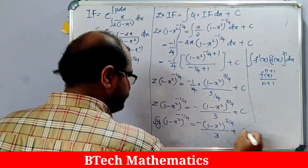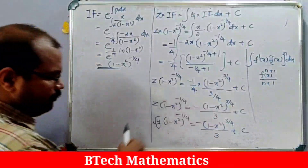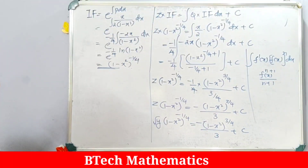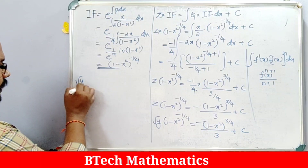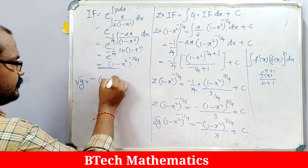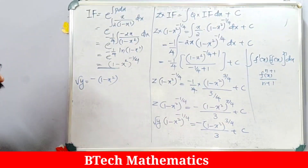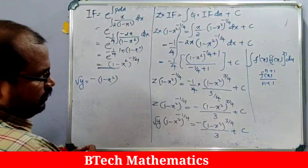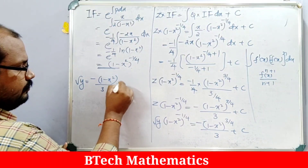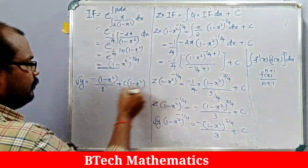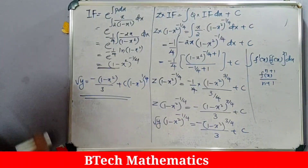Dividing throughout by (1-x²)^(-1/4) and substituting back z = √y, the final answer becomes: √y = -(1-x²)^(1) / 3 + C·(1-x²)^(1/4).